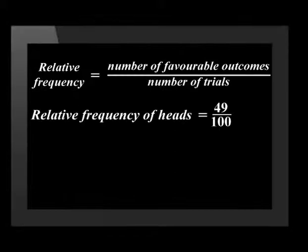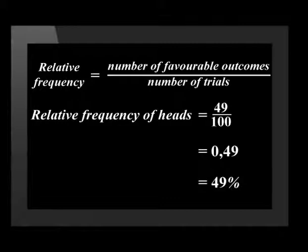If we tossed an unbiased coin 100 times and got 49 heads, then the relative frequency of getting heads is 49 divided by 100, which is equal to 0.49. This is also equal to 49%.